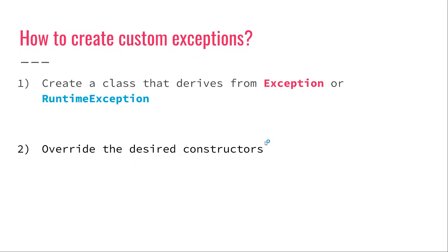We can also create our own custom exceptions, because the generic Exception and RuntimeException classes are not very meaningful. When building production-ready applications, we need to convey meaning. We can create custom exception classes simply by deriving from Exception or RuntimeException. If you want to create a checked exception, derive from Exception and override some constructors. If you want to create an unchecked exception, extend RuntimeException and override the desired constructors. It's very easy to construct exception objects because at the end of the day, they are just Java classes.